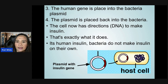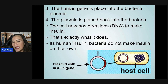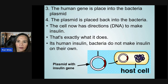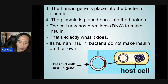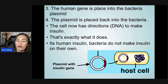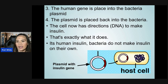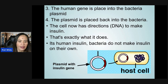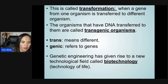The bacteria incorporate the insulin gene into the plasmid, and when they reproduce asexually, more and more human insulin is produced from that plasmid.